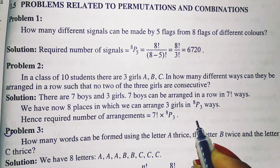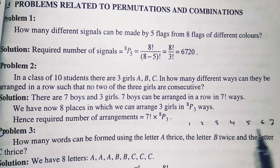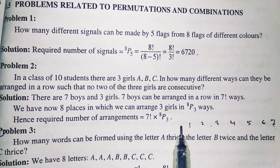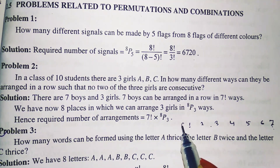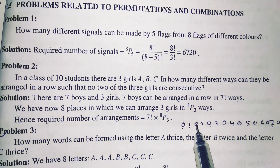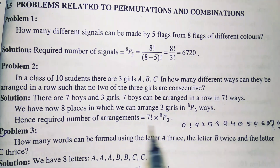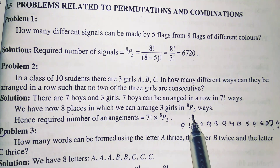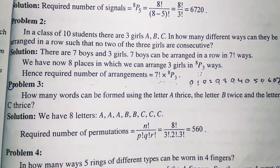Seven factorial ways means there are positions 1, 2, 3, 4, 5, 6, and 7 — total seven places to arrange the boys. Now for the three girls, the possible positions are before, between, or after each boy, giving positions 1 through 8 — total eight positions where the girls can be placed. So in eight positions three girls can be placed in 8P3 ways, and the total number of arrangements is 7! × 8P3.